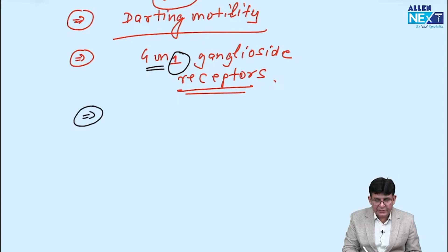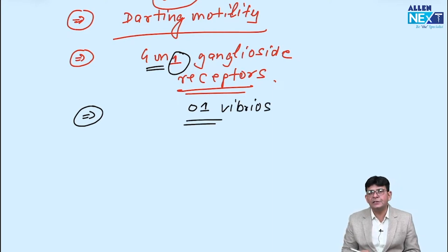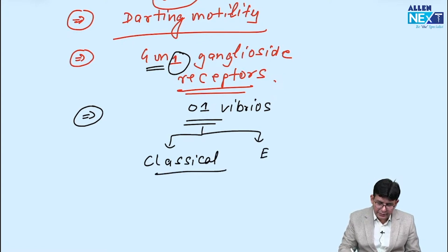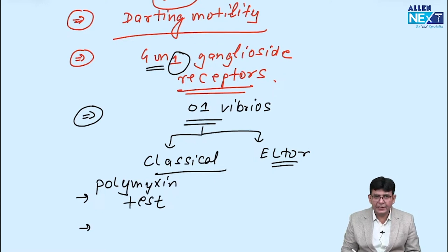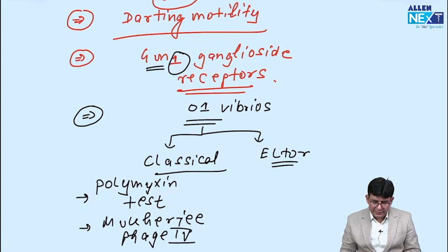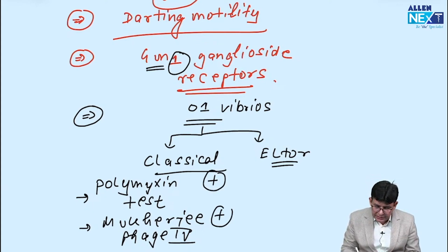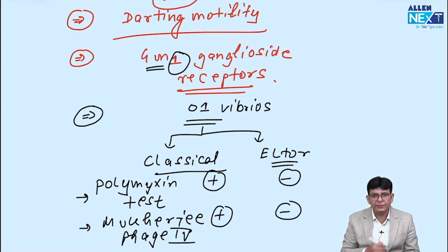Besides that, other ones which can come is that O1 Vibrios. Those particular Vibrios which have this O1 antigen with them, they are of two types. One is classical and one is Eltor. How to differentiate between them? So basically to differentiate between them, you go for two testings. One is polymyxin antibiotic testing and another one is a phage testing that is termed as Mukherjee Phage IV. Polymyxin test and Mukherjee Phage IV, these are the two tests which differentiate between classical and Eltor and both of them, they are positive in the case of classical and they are negative in the case of Eltor.